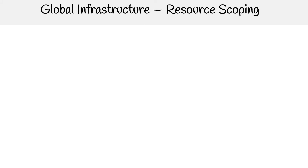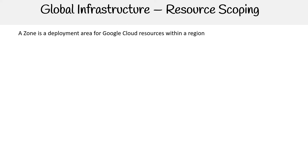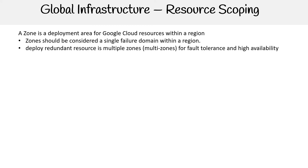So I just want to reiterate on zones one more time. A zone is a deployment area for Google Cloud resources within a region. Zones should be considered a single failure domain within a region, and you should deploy redundant resources in multiple zones for fault tolerance and high availability.